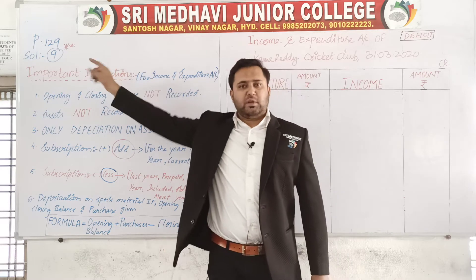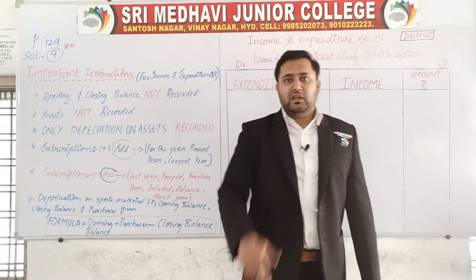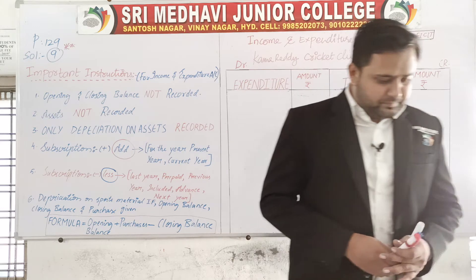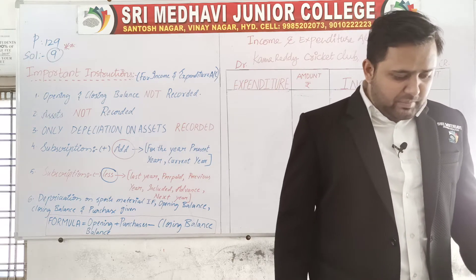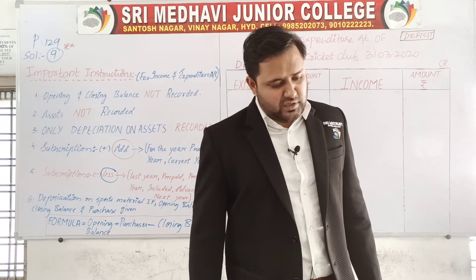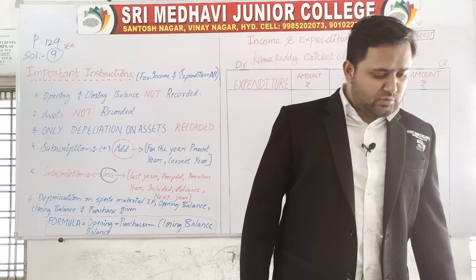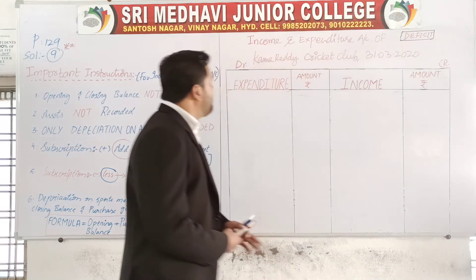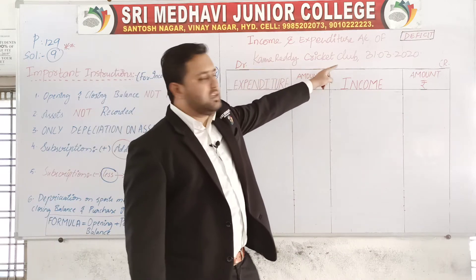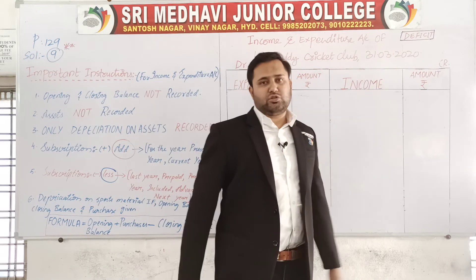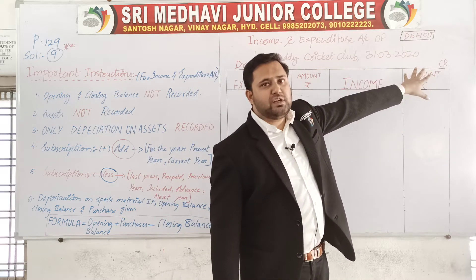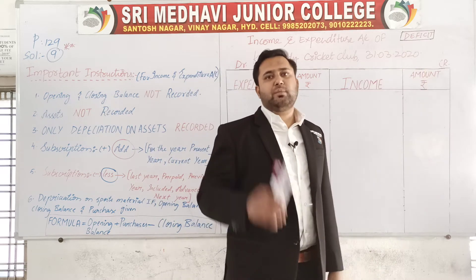You will find the question on page number 129, question number 9 — an important question for the final examination. From the following receipts and payments information, prepare the income and expenditure account for the year ended 31st March 2020, for Kama Reddy Cricket Club. I have written 'deficit' here to indicate that this problem results in a deficit.